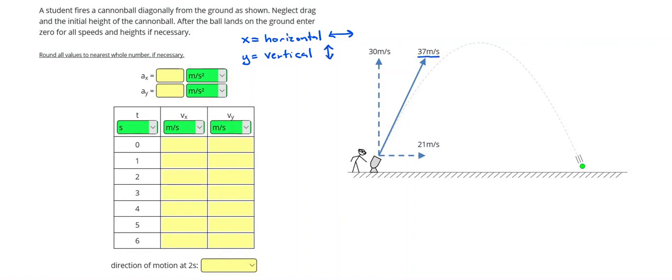So while this is the object's real speed, we're not actually going to use that. We're going to use the 30 meters per second upwards and the 21 meters per second to the right in our chart. So in our chart, since y is up and down, that initial value for the initial vertical velocity is 30. And the initial velocity to the right, the x, is 21 meters per second.